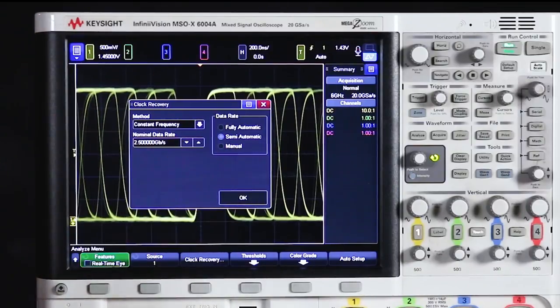Semi-automatic should be used when you have an estimate of what that bitrate is and you want the scope to use that estimate to figure out what the ideal bitrate should be. Manual is used when you know that exact ideal bitrate that you want to work with.